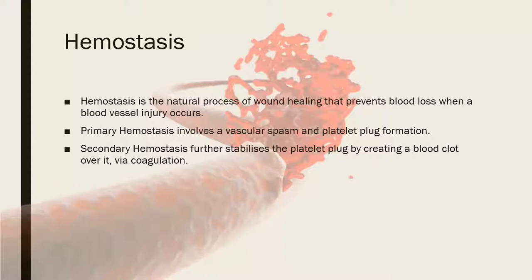Hemostasis usually applies to smaller vessels, whereas larger blood vessels and arteries would require surgical intervention. There are two parts to hemostasis: primary hemostasis and secondary hemostasis. Primary hemostasis involves two steps: the first is vascular spasm, and the second is platelet plug formation.